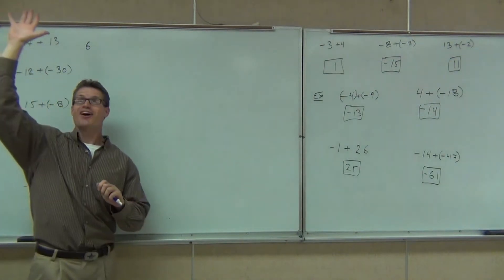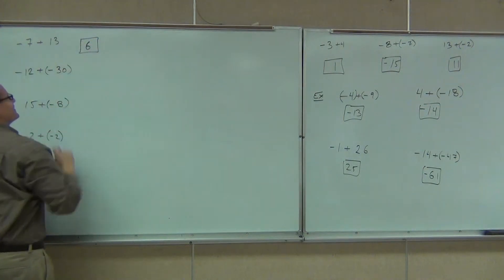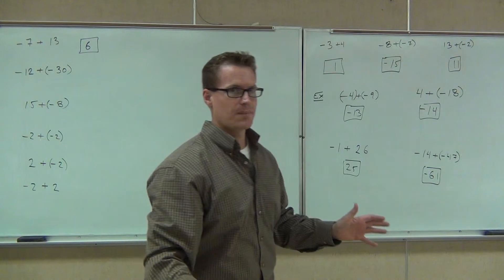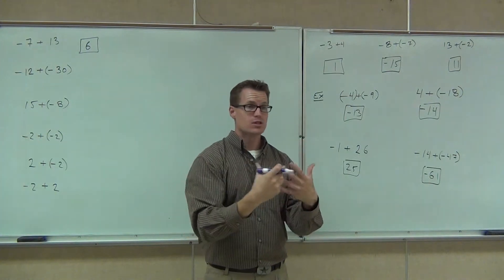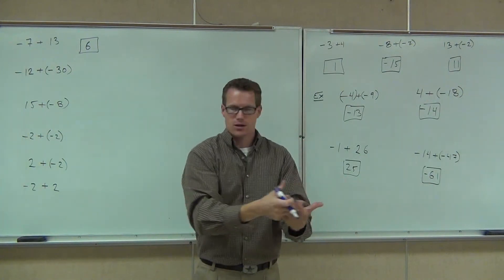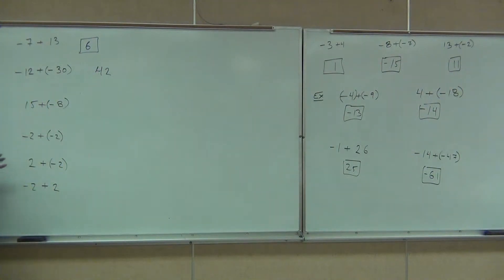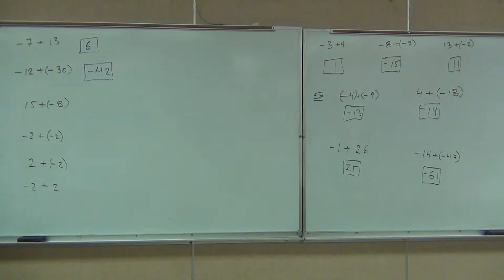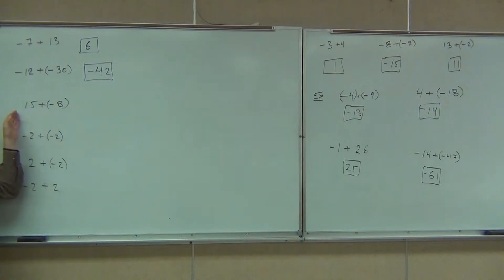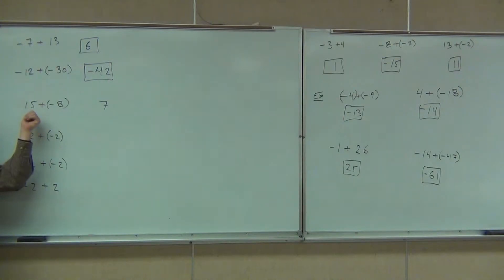How many people got positive 13? Oh no, that's not right. Next one: we have a plus, and I'm looking at the signs — I see the same signs. Same signs tells me I need to add those numbers together and keep the common sign. So 12 plus 30 gives me 42, but since both were negative I keep that negative: negative 42. Next up we're back to different signs — I have positive and negative — so I subtract and get 7, which stays positive because my 15 was positive.